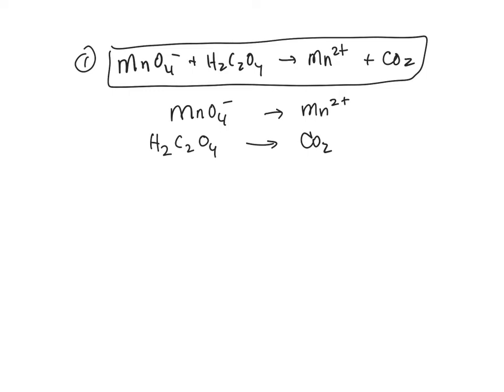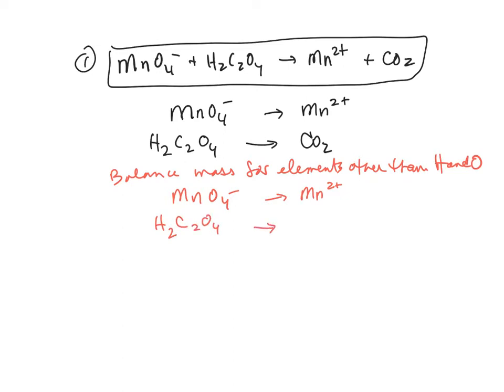There's four or five different methods for balancing these reactions. So the first thing we want to do is balance the mass for elements other than hydrogen and oxygen. So I like to rewrite what I have in the last step again. Makes it just easier for me to see it.